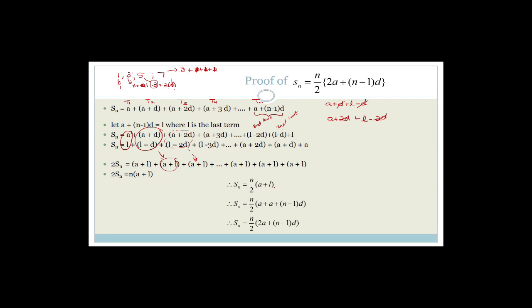Substituting L equals A plus (N minus 1)D into Sn equals N over 2 times (A plus L) gives us Sn equals N over 2 times (2A plus (N minus 1)D).